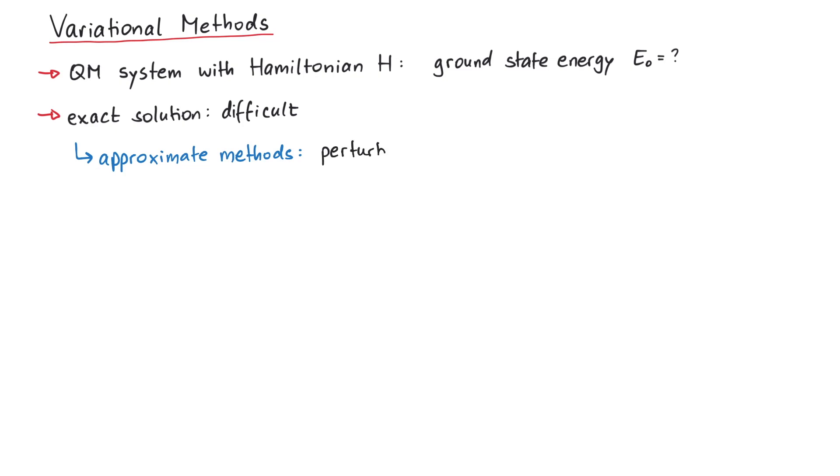One example of an approximate method is perturbation theory. If we can separate the Hamiltonian into a part where we know the exact solutions, H0, and a small perturbation, we can get good results using perturbation theory.